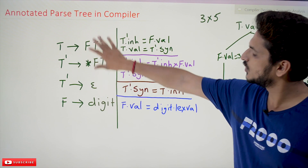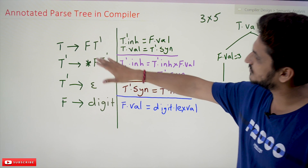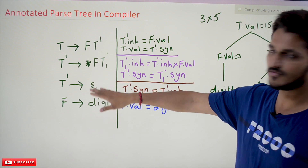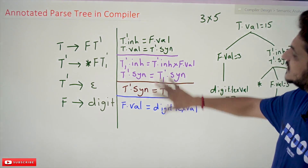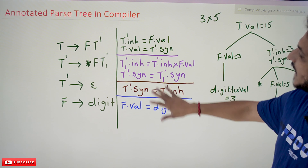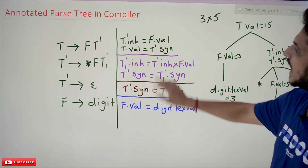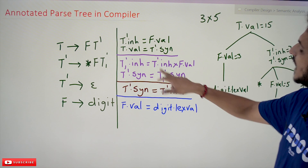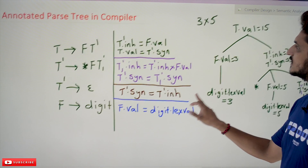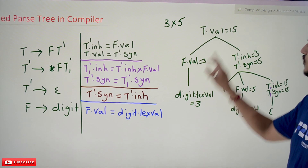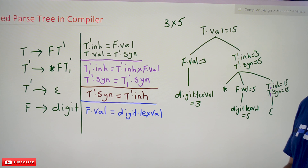This is the context-free grammar we are taking — it is the expression grammar based on multiplication. These are the semantic conditions and the attributes that we have mentioned. Different attributes have been used. In our last class we discussed that if you show it like this, this is what we call the annotated parse tree.